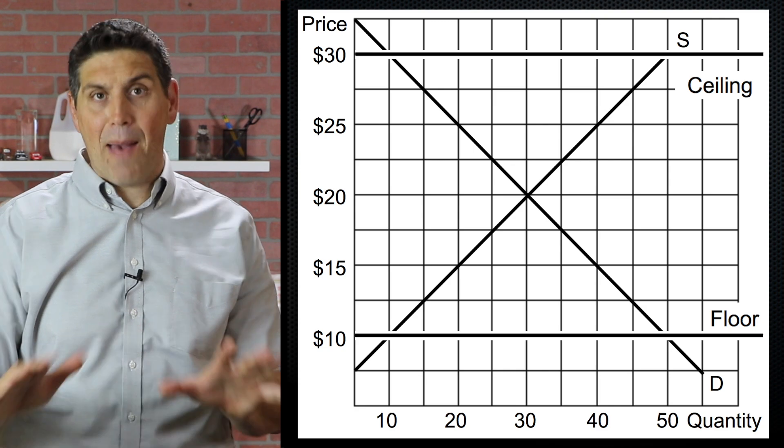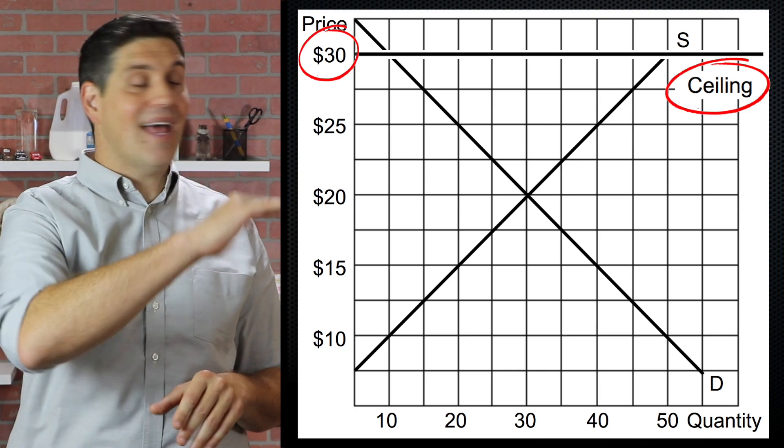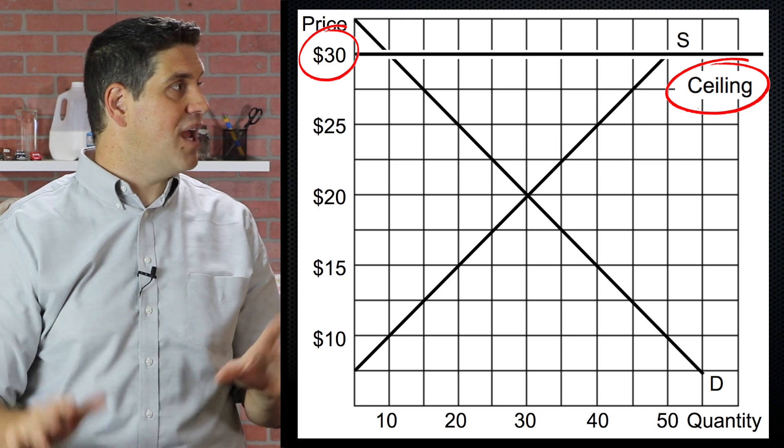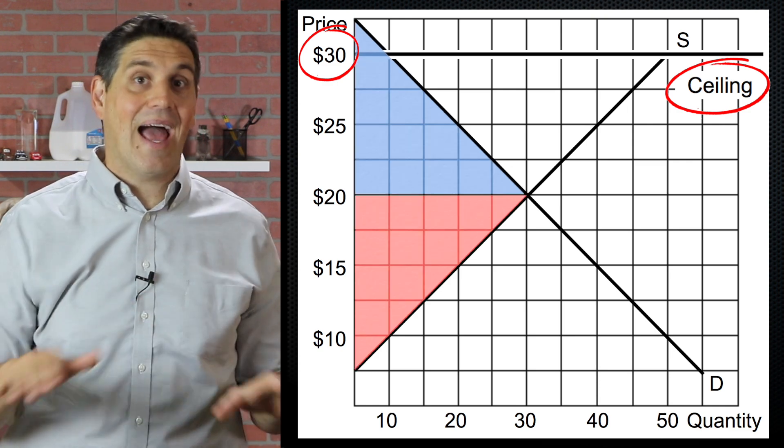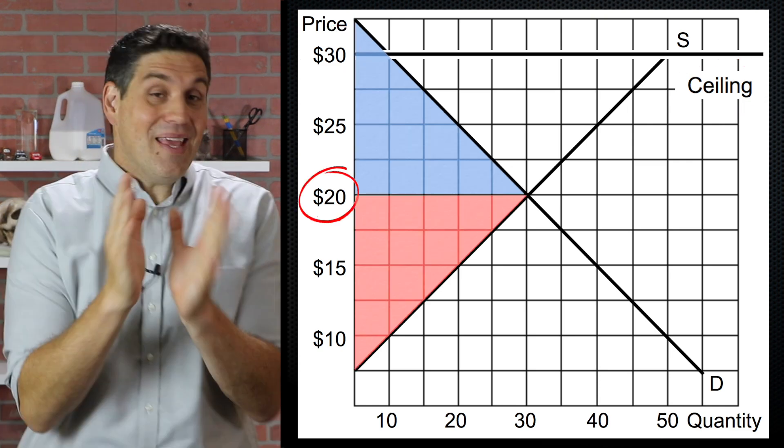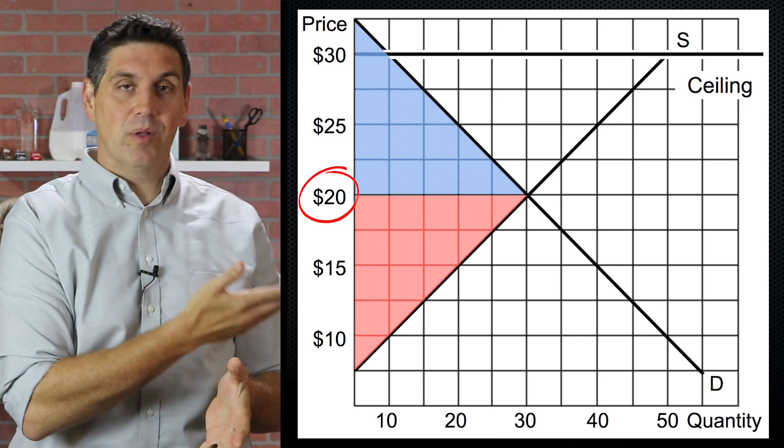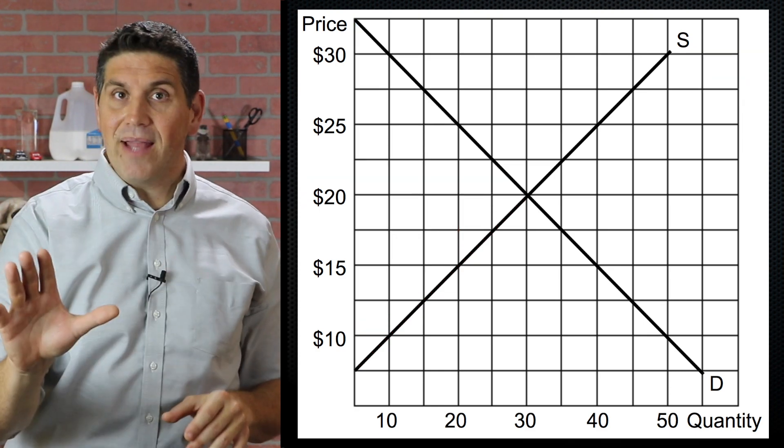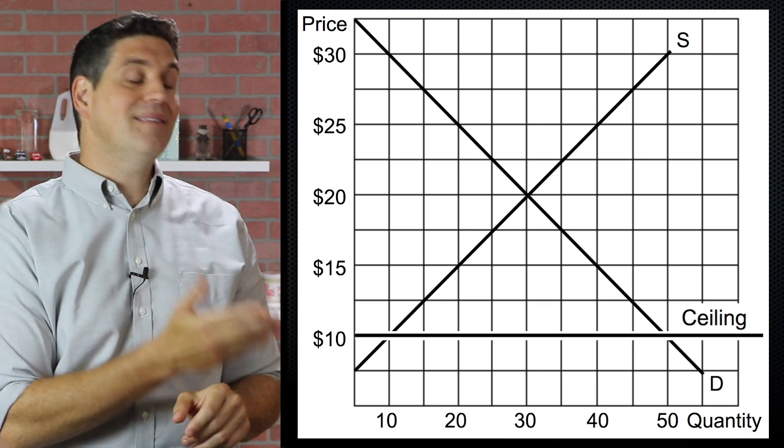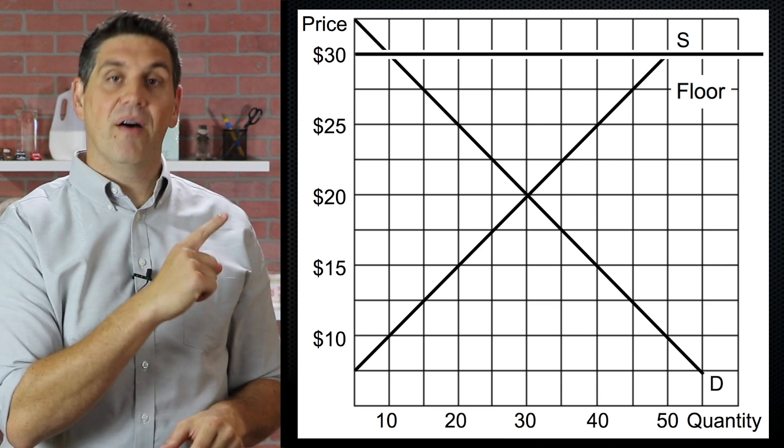In other words, nothing will happen in the market. So for example, a price ceiling at $30 has no effect on the market. Nothing's going to change. Consumer producer surplus will be exactly the same as it would at equilibrium because the price is going to stay at equilibrium. So just remember to be binding, to have an effect on the market, a price ceiling has to be below equilibrium and a floor has to be above it.